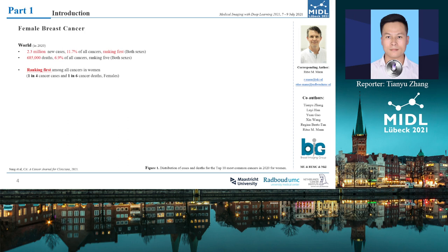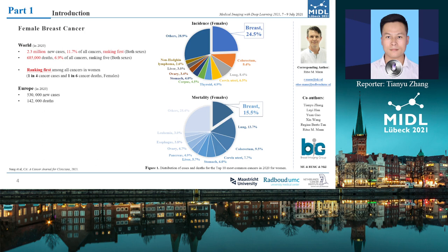According to the statistics for 2020, in human cancers, the incidence of female breast cancer is 11.7%, ranking first in the world. As shown in figure one, in women, the incidence and mortality of breast cancer are higher than other cancers — one in four cancer cases and one in six cancer deaths — ranking first among cancers. More importantly, the incidence of breast cancer is still growing rapidly.